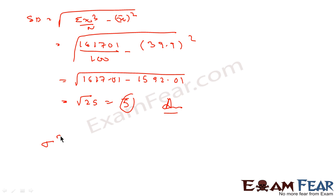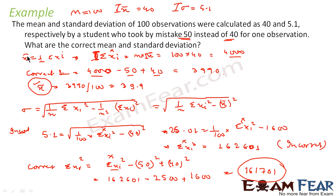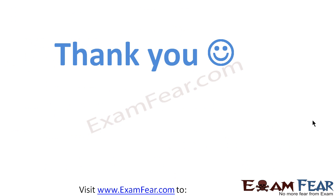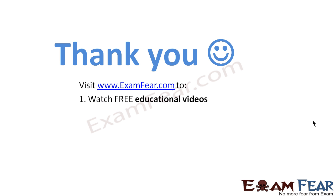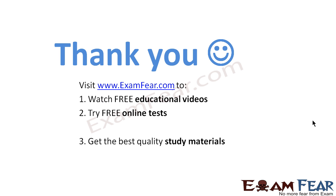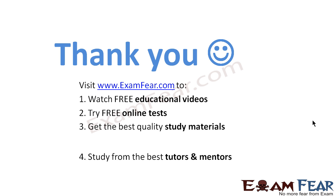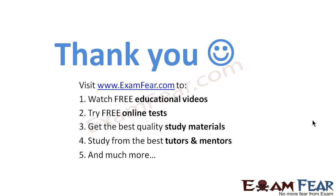The correct variance = 5² = 25, and the correct standard deviation = 5. To summarize: we used correct sum = incorrect sum − 50 + 40, and correct Σxi² = incorrect Σxi² − 50² + 40². Thank you! Visit examfear.com to watch free educational videos, try free online tests, get the best quality study materials, and study from the best tutors and mentors.